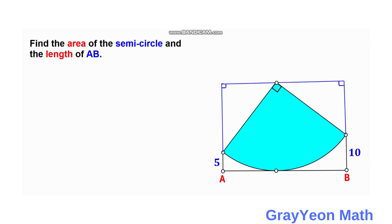Next, we label the radius as R. This length is the radius, and this length is also the radius. From the point of tangency towards AB from the center of the quarter circle is also the radius. Since one distance is 5, this length is actually R minus 5.